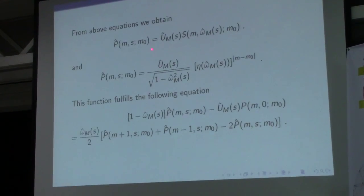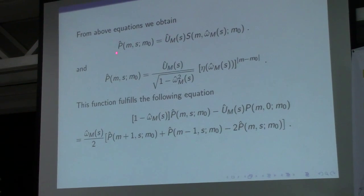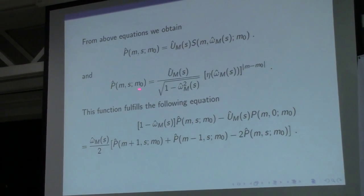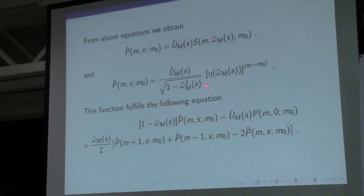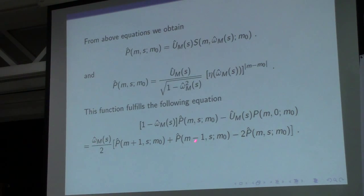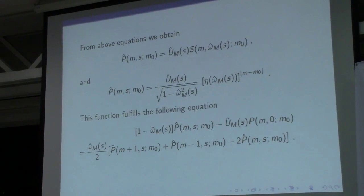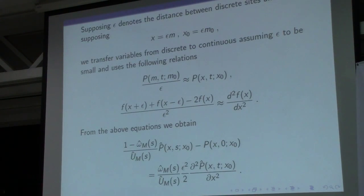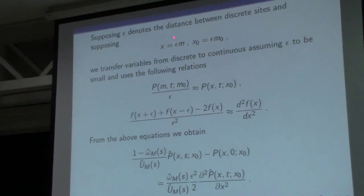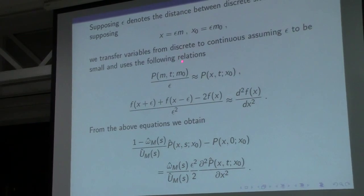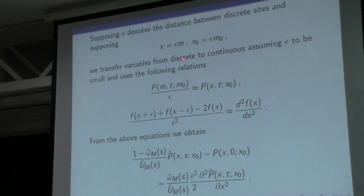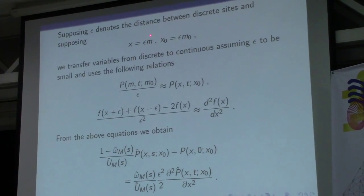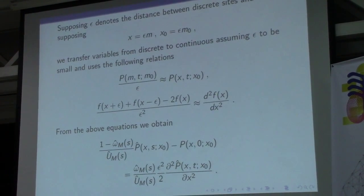After simple calculations, we get the following equation for the homogeneous system without memory, and the following difference-differential equation for continuous time and discrete position. We then pass from discrete position to continuous spatial variable using the standard formulas, where epsilon denotes the distance between discrete sites.